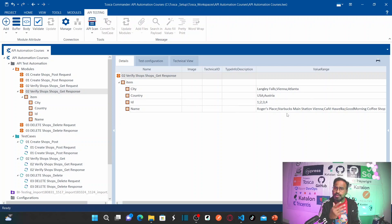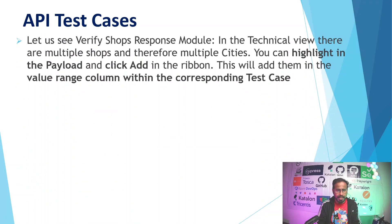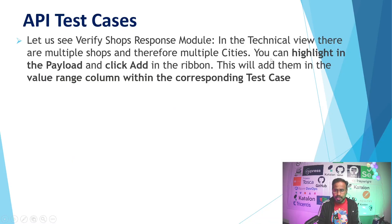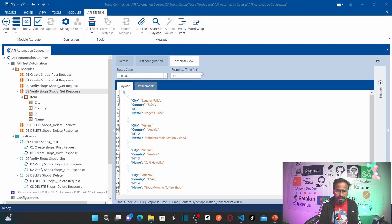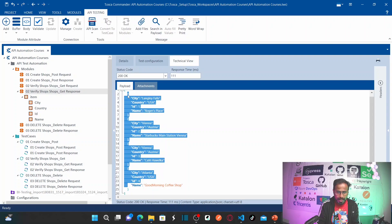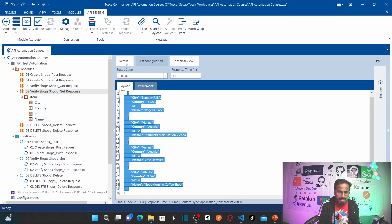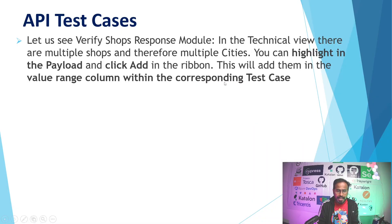These value range values can now be used for the test case. In the verify shops response module technical view, there are multiple shops and hence multiple cities. You can highlight in the payload and click the add ribbon, which adds the value range column within the corresponding test case. This makes it possible to select any of these values from the dropdown menu in the value column.